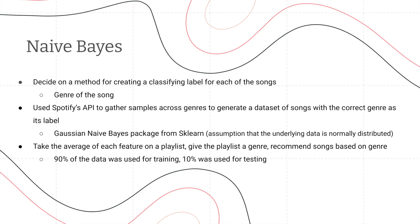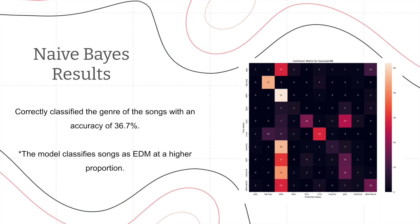The next method we did was Naive Bayes. The first thing we had to do was decide on a method for creating a classifying label for each of the songs, and we chose genre. We used the Spotify API to gather samples across genres to generate a dataset of songs with the correct genre as its label. We used the Gaussian Naive Bayes package from sklearn, then took the average of each feature on a playlist — making it seem like the playlist was one big song — and then assigned that playlist to the most relevant genre and recommended songs based on that genre. We used 90% of the data for training and 10% for testing. Our results correctly classified the genre of the song with an accuracy of 36.7%, and as a side note, as seen in our confusion matrix, the model classifies songs as EDM at a very high proportion, and we're unsure why this is.